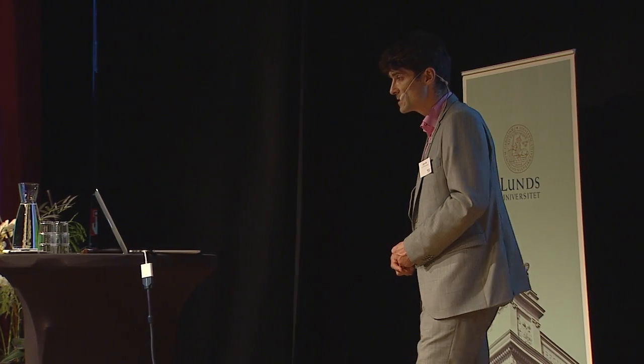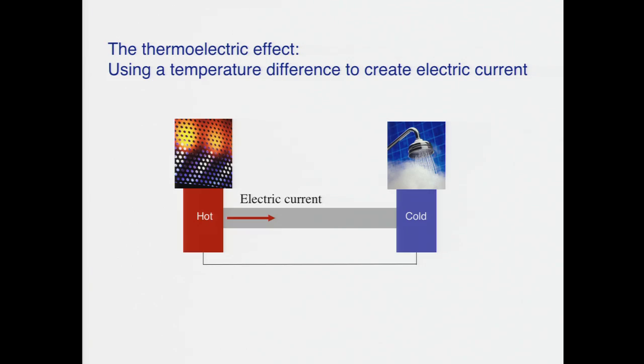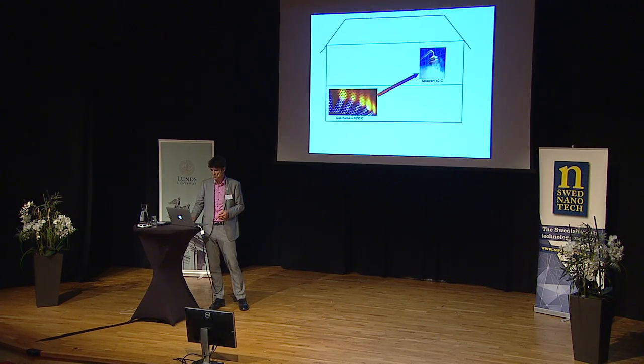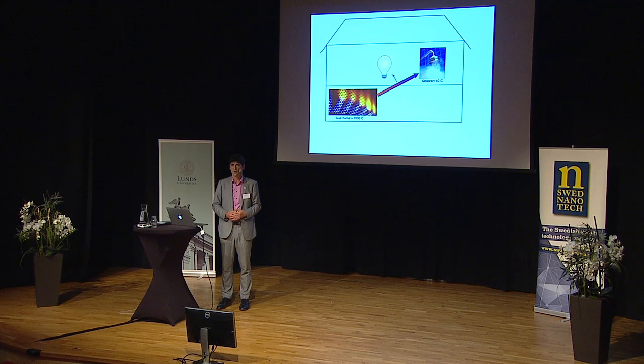One way of doing this in principle would be to use the thermoelectric effect, which is basically a very general phenomenon that you can observe in pretty much any piece of material that conducts electricity — could be a metal, could be a semiconductor — which basically says if you keep one end warm and the other end cold, you will in general observe a voltage between the two ends. And of course if you close the circuit you can run a current, and if you can run a current then in principle you can use this for something — so you could go back to your house and switch something in between the flame and the hot water and, for instance, use your light bulbs.